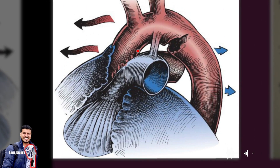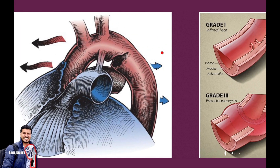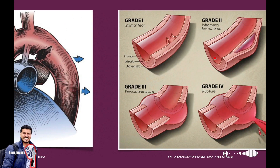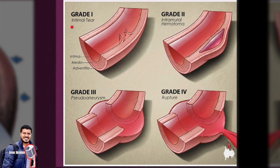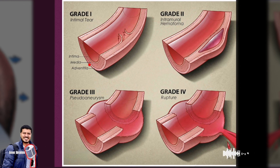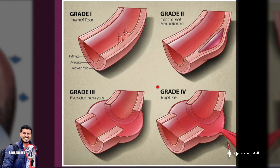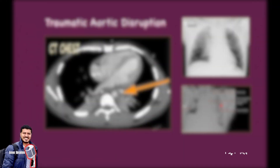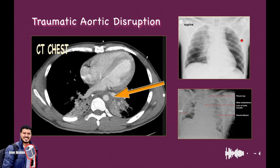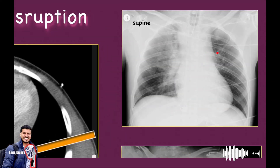The site of injury in the aorta is typically at the isthmus, between the ascending and descending portions. We also have classification by grades: Grade 1 is intimal tear, Grade 2 is intramural hematoma, Grade 3 is pseudoaneurysm, and Grade 4 is frank rupture — traumatic aortic disruption.